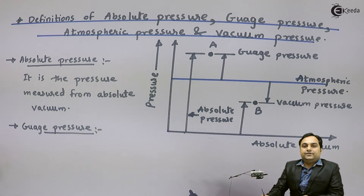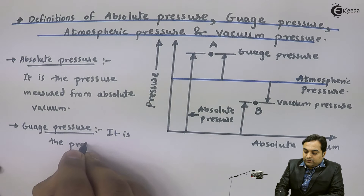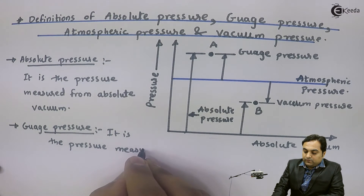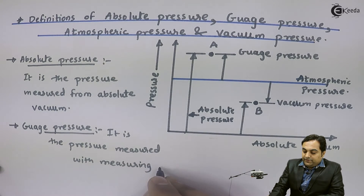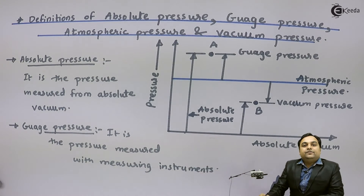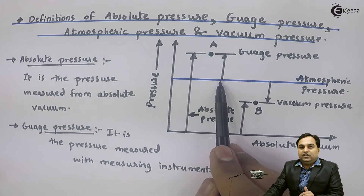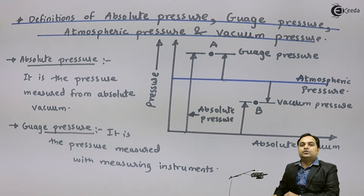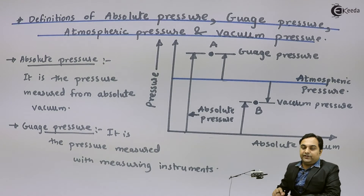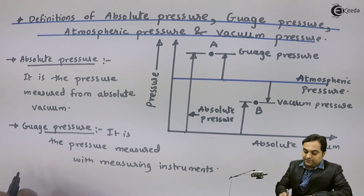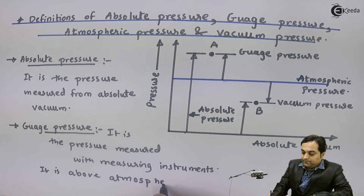Next is gauge pressure. Gauge pressure is the pressure which we measure with the help of measuring instruments. When we are measuring gauge pressure, our reference is atmospheric pressure — it means we take atmospheric pressure as zero and then start measuring. The measuring instruments used to measure gauge pressure start from a zero reading, and that zero reading indicates atmospheric pressure. So gauge pressure is the pressure measured with measuring instruments and it is above atmospheric pressure.